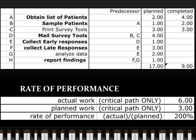Although nine weeks of work have technically been completed, we are only concerned with the critical path, listed in bold. Therefore, six weeks is the actual work time. The planned work time is three weeks. The rate of performance is a percent ratio of actual to planned work time. In this case, rate of performance is 200%.